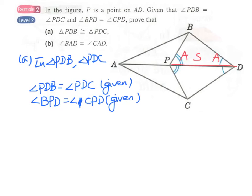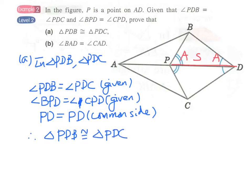And lastly, we have PD equals PD. We have a common side here. Therefore, triangle PDB is congruent to triangle PDC. We have the reason.